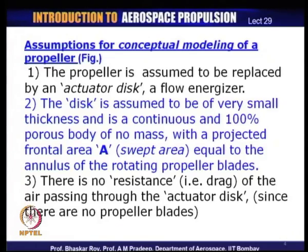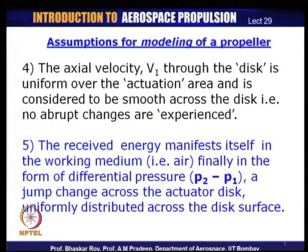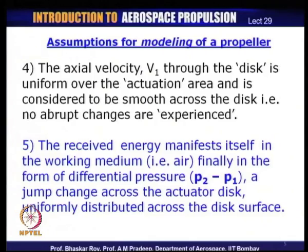The actuator disc has no resistance — it offers no drag at all. The porosity is absolutely 100 percent and it offers no resistance or drag whatsoever to the air passing through it. The actual velocity which the air acquires as it approaches the disc is uniform over the entire actuator disc and is considered smooth across the disc — it does not experience any abrupt jump change as it passes through, as if the disc does not exist, which is why the 100 percent porosity is manifested.